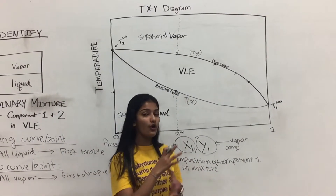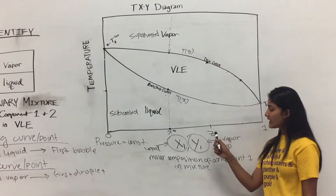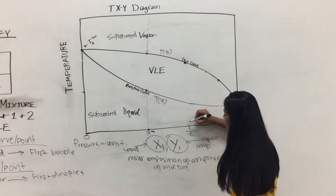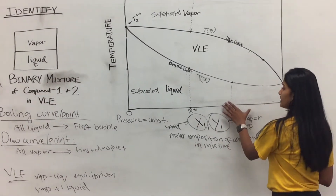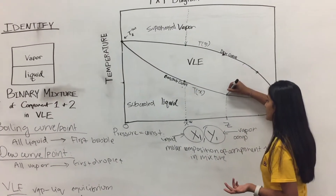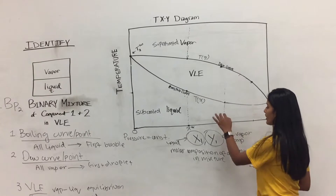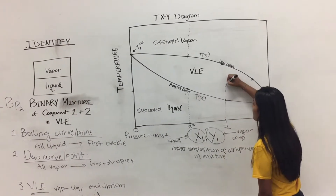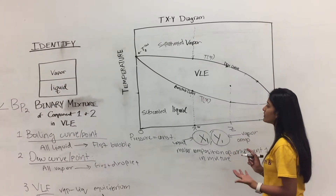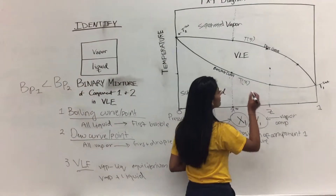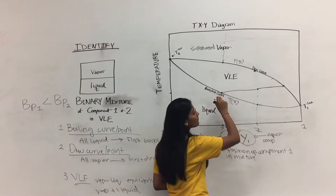Now let's say we're given the overall composition of the mixture, which we'll call z — the overall composition of component 1. As we heat the system, we reach the boiling point where all is liquid, then the first vapor begins to form, and we continue heating into the vapor-liquid equilibrium region. As we heat more and more, more of component 1 turns into vapor. At a given point in the VLE region, we draw a horizontal tie line — a vapor-liquid equilibrium tie line — that intersects both the boiling curve and the dew curve.